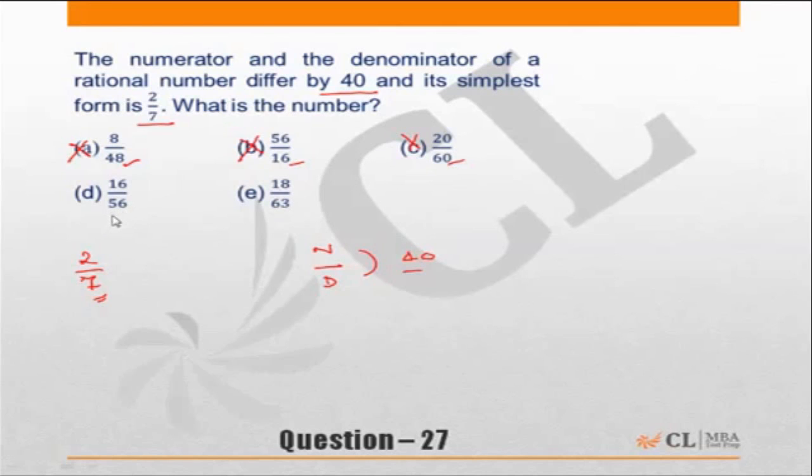So your answer can be D because 56 is a multiple of 7 or E is 68 is a multiple of 7. What is the difference between numerator and denominator? The question says the difference is 40. In choice D, 56 minus 16 difference is 40. So we will hold on with this choice.